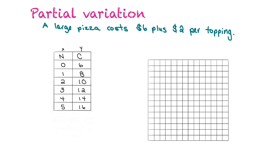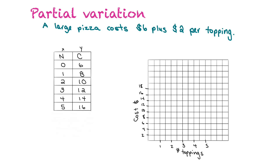Now we'll put that onto our graph. The dependent variable, cost, will be on the y-axis, and the number of toppings will be on the x-axis. Every two dashes will represent one topping, and along the cost axis we'll mark every two units: two, four, six, eight, ten, twelve, fourteen, sixteen, eighteen, and so on.